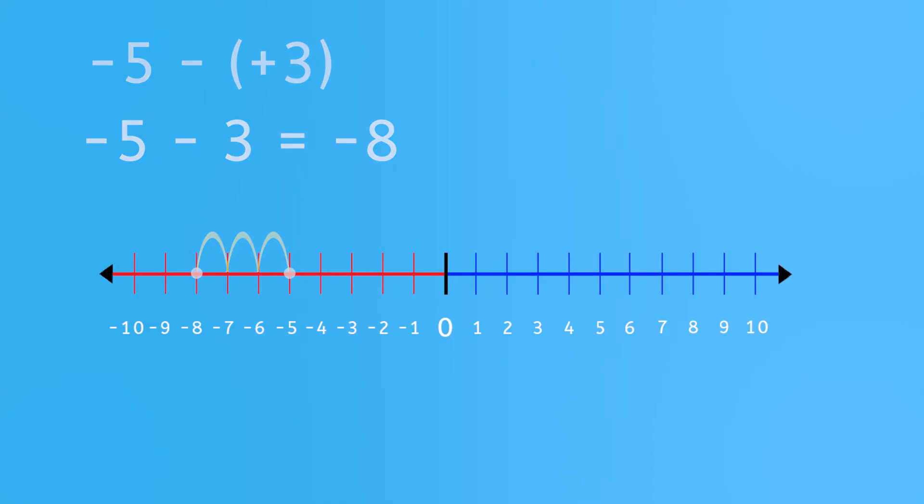Should we try another one? Negative 1 minus 8. You can change it to negative 1 minus parentheses plus 8 parentheses. Again, start at zero, jump down to negative 1, then move 8 spaces to the left because you're subtracting positive 8. That gives you negative 9.